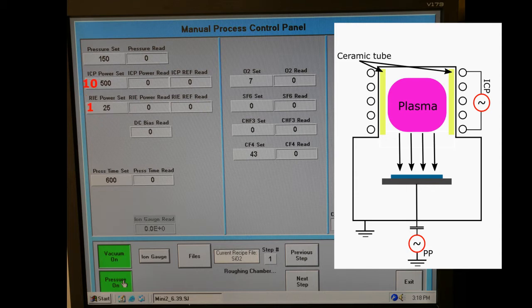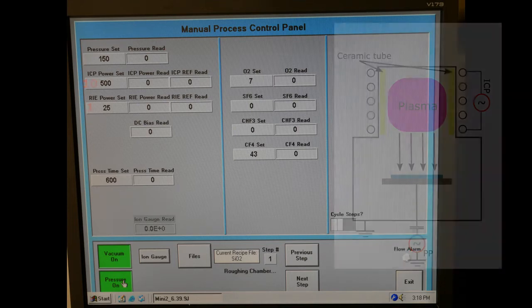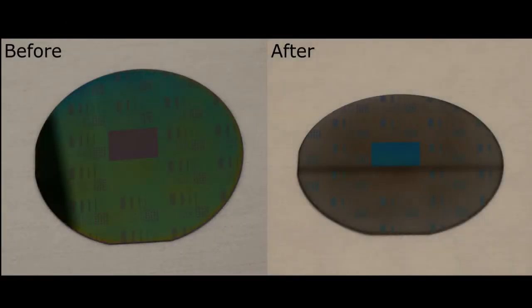Typically, a ratio of around 10 to 1 is used for ICP and parallel plate power. However, each recipe must be optimized for each sample to ensure that the desired rate, anisotropy, and selectivity are achieved. Here is a sample of SiO2 on silicon before and after dry etching.